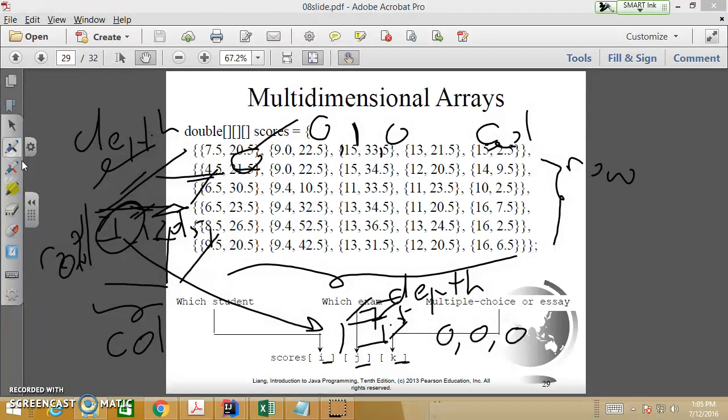And then you can look at the depth. So this 9.0 actually row what? Still row zero, right? Column zero, depth one, which is go to the next box behind that one, right? So that should store 9.0.